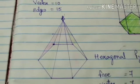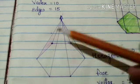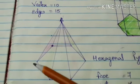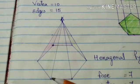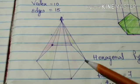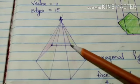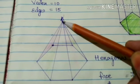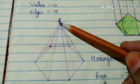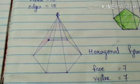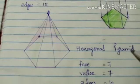Now how many vertices are there? So it is 1, 2, 3, 4, 5, 6 and above, 1 more, it is 7. So there are 7 vertices in a hexagonal pyramid.